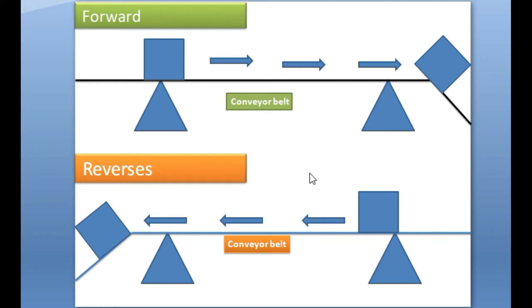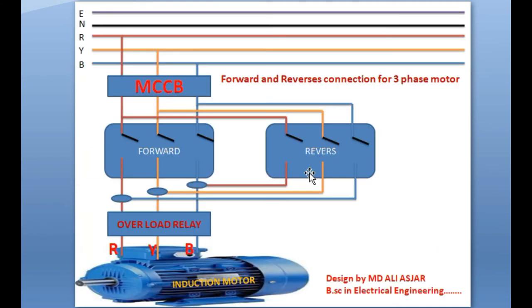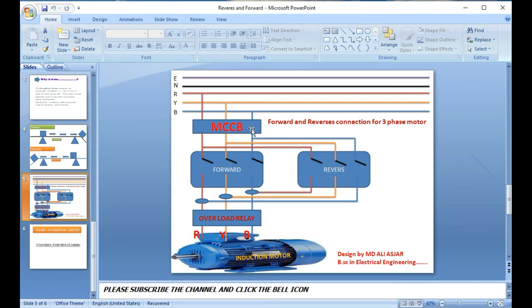This system is driven by a three-phase induction motor. Now let's go to the power block diagram of forward and reverse. We have the earth, neutral, and three-phase lines R, Y, B — red, yellow, blue. The MCCB (Molded Case Circuit Breaker) or MCB (Miniature Circuit Breaker) is connected directly to R, Y, B. For forward, the phases connect directly to the motor without any change. For reverse, any one phase is swapped, which causes the motor to run in the opposite direction.